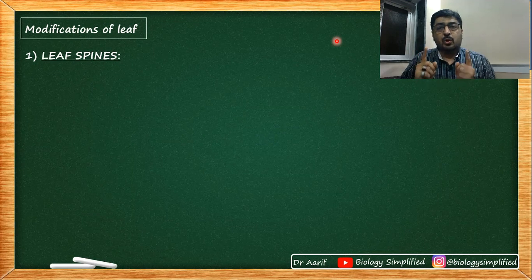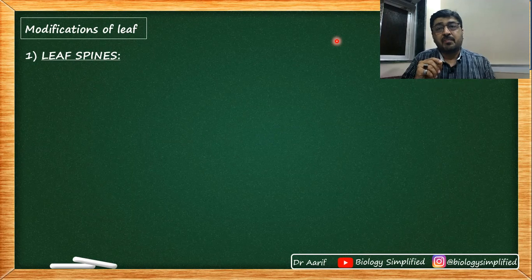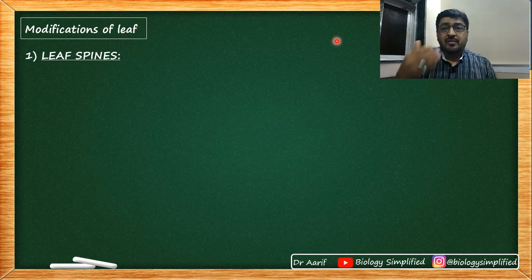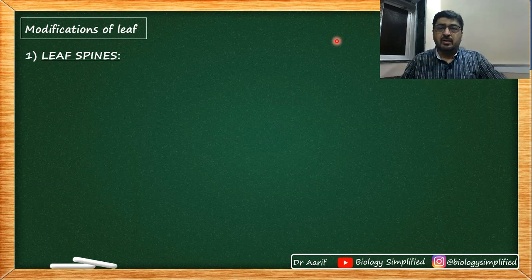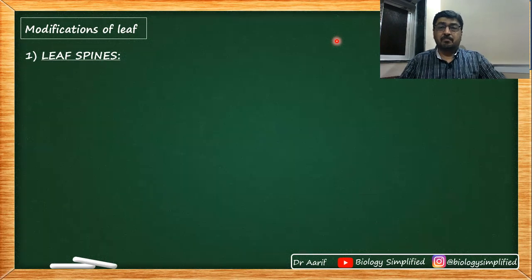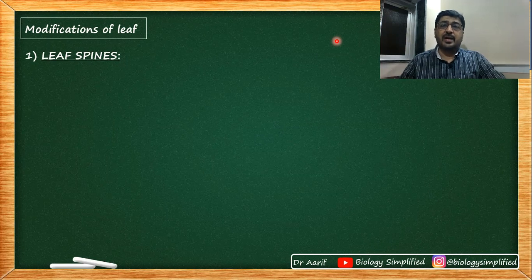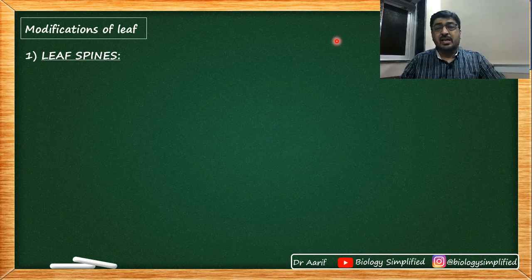Thorn is a part of stem — either an axillary bud or an apical bud becomes a thorn. We saw Carissa, Duranta, Bougainvillea — either apical or axillary bud becoming a thorn. Now in leaf spine, the entire leaf becomes a spine. As we discussed with phylloclade and Opuntia, the leaf is modified to reduce the rate of transpiration, and the stem takes over the responsibility of photosynthesis.